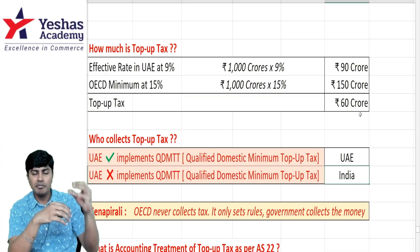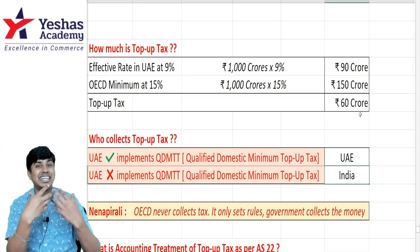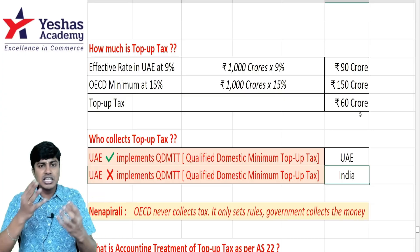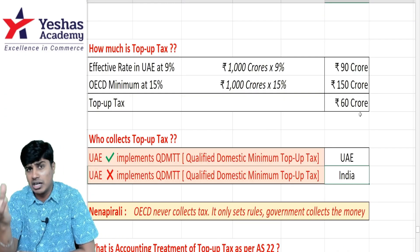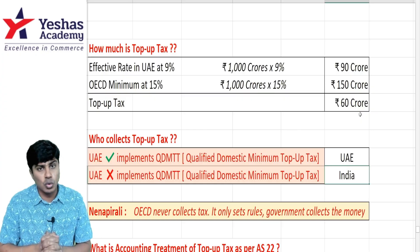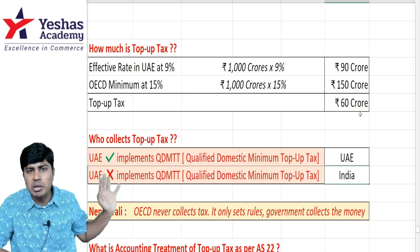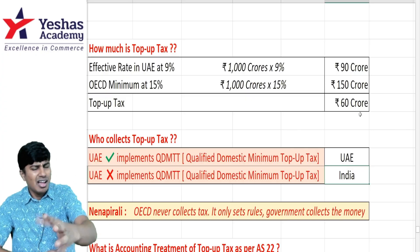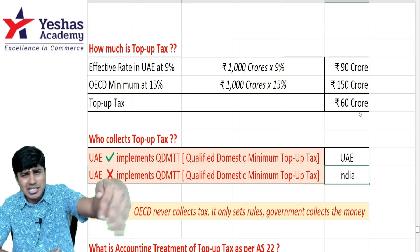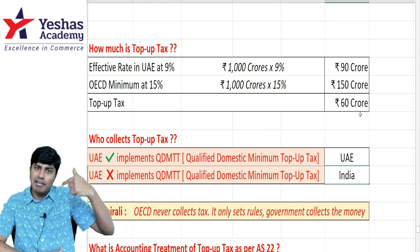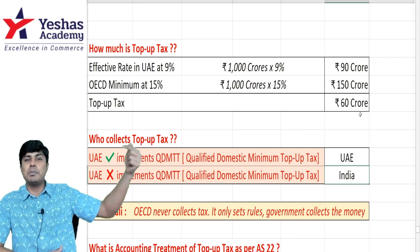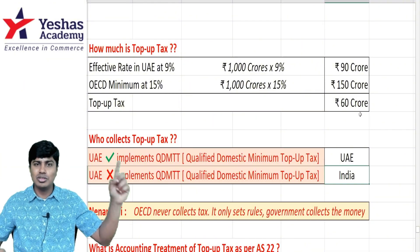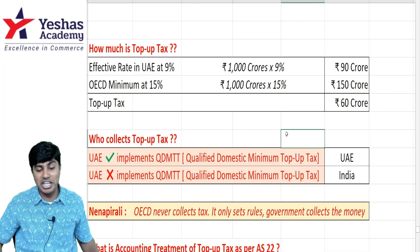There are many countries globally that charge very low or near-zero tax rates, tempting Indian companies to open subsidiaries there, book profits there, and pay less tax — causing Indian government to lose revenue. This is not just for India but for several countries. All of them together formed OECD, which says every country must charge a minimum 15% tax. If they charge less, the differential is called top-up tax. Whichever country has jurisdiction can collect it; if they don't, another country can.